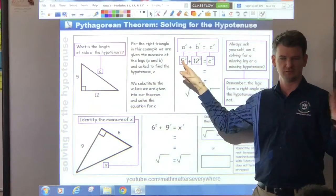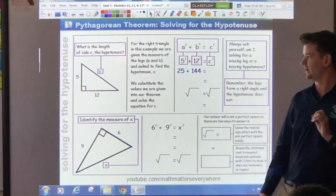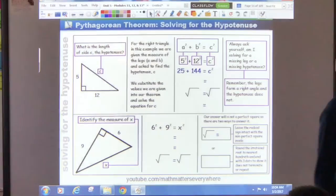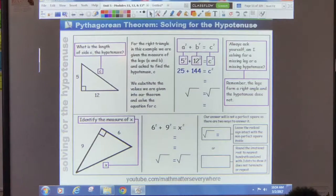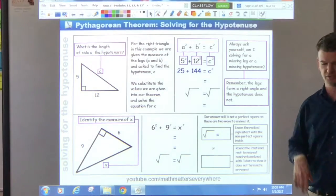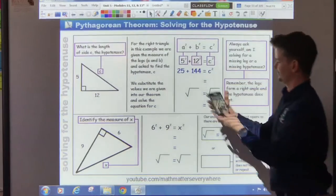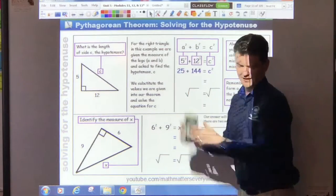5 squared is what? Plus 12 squared. So, we get 25 plus 144 is equal to C squared. So, we square both the values. Squaring means 5 times 5, 12 times 12. In your calculator, you can hit 5, and then there should be a little X² button. X² button. It's right here on your calculator. That's the square.